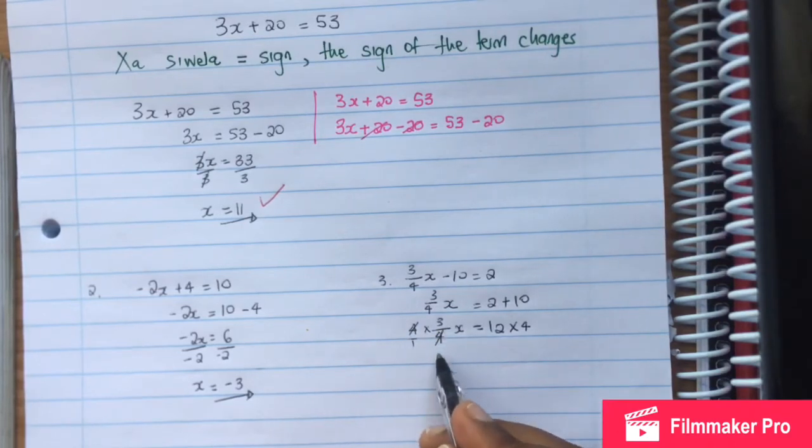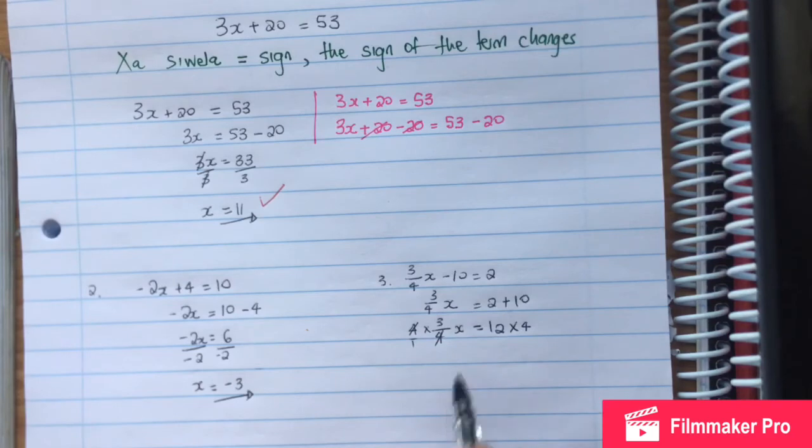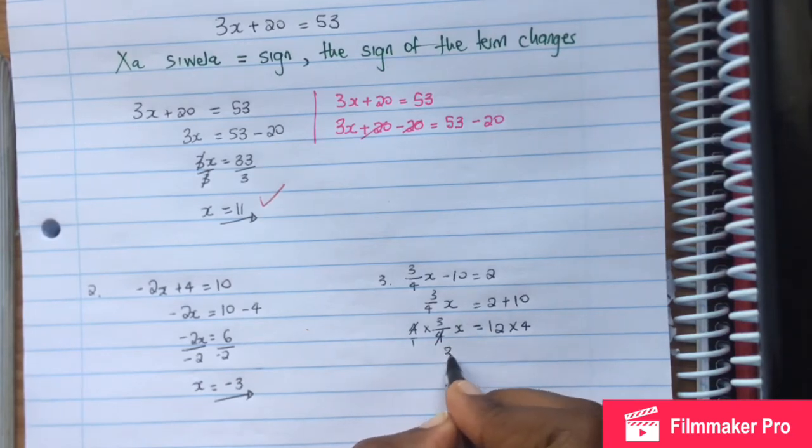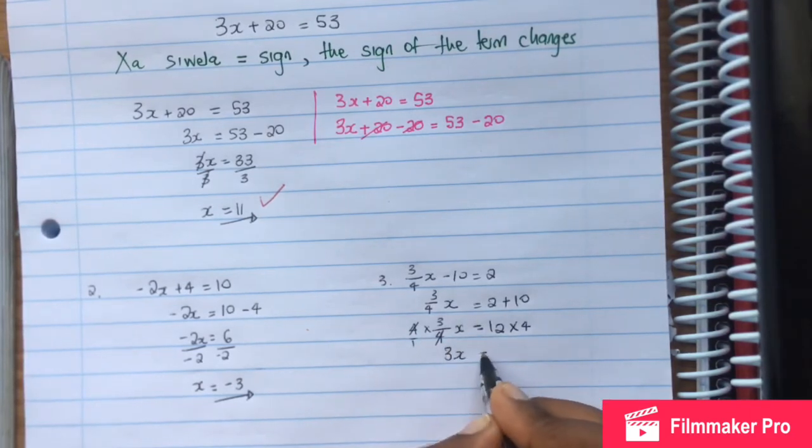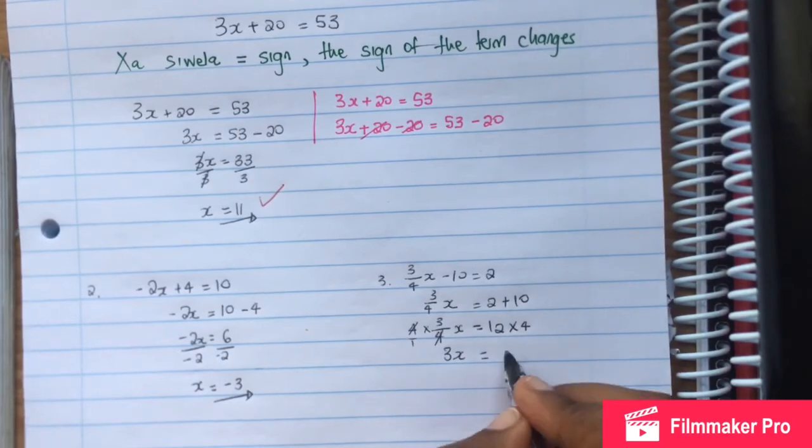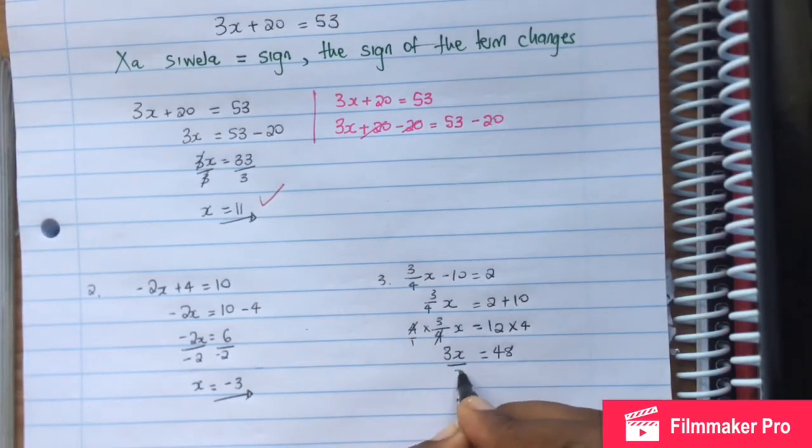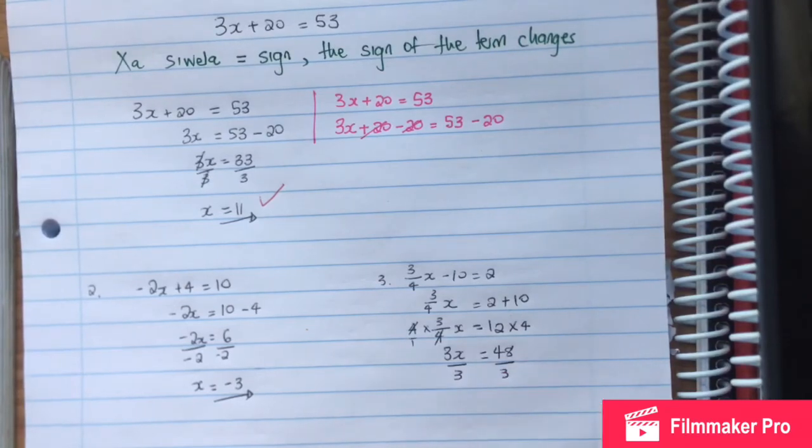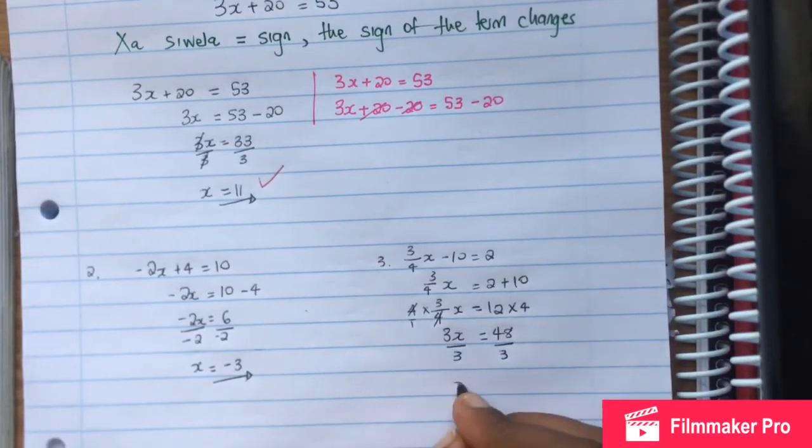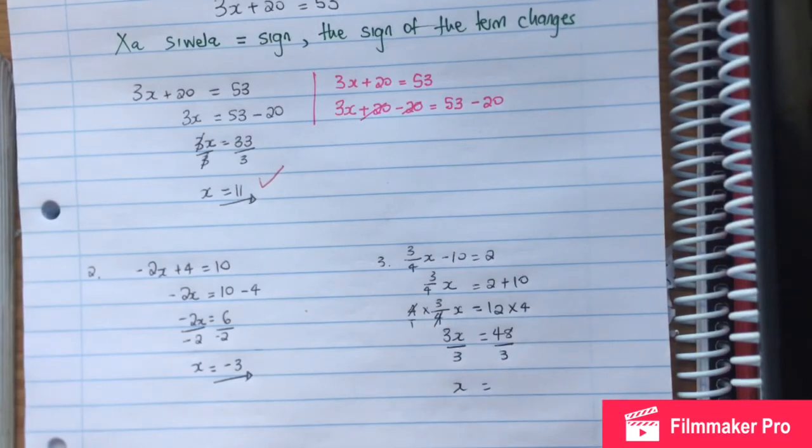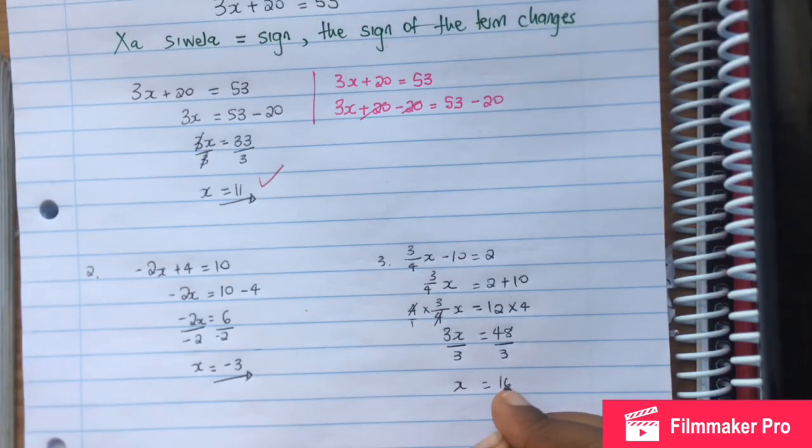Remember that 3 over 4 is the same as 3 over 4 times 1 over 1. We can cancel. This is multiplication of fractions. We get 3x, and 4 times 12 is 48. Then we divide by 3 on both sides, and x is equal to 48 divided by 3, which is 16.